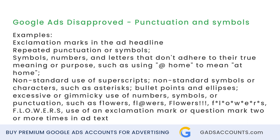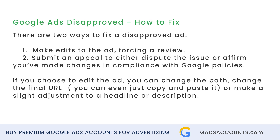There are two ways to fix a disapproved ad. One: make edits to the ad, forcing a review. Two: submit an appeal to either dispute the issue or affirm you've made changes in compliance with Google policies.